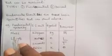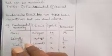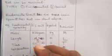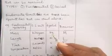An example of fundamental quantities is mass. The SI unit of mass is kilogram, and the symbol for kilogram is kg. The dimension of mass is capital letter M.